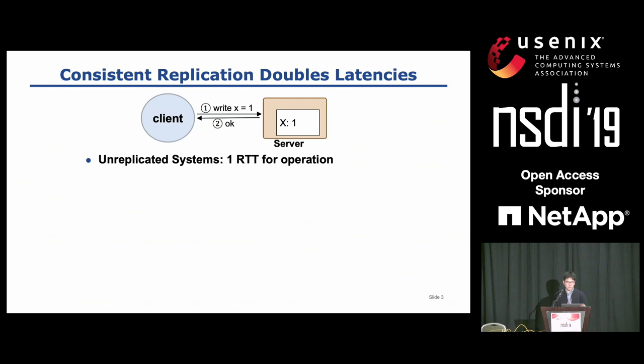Before talking about CURP, let's see how replication increases latency of operations. Without any replication, a client can simply send an RPC request to a server, and the server returns the execution result immediately. So the entire process takes one RTT.